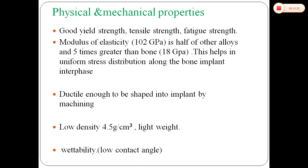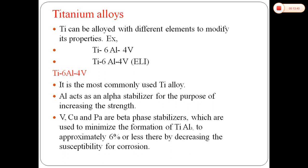Titanium is ductile enough to be shaped into implants by machining. It has a low density of 4.5 g/cm³, making it lightweight, with good wettability and low contact angle. Titanium can be alloyed with different elements to modify its properties. Aluminum acts as an alpha-phase stabilizer for the purpose of increasing strength. Copper and other elements are beta-phase stabilizers, used to minimize the transformation of titanium-aluminum, keeping aluminum at approximately 6% or less, thereby decreasing susceptibility to corrosion.